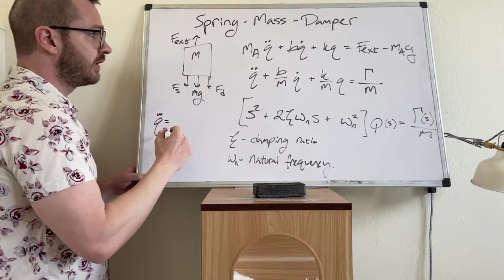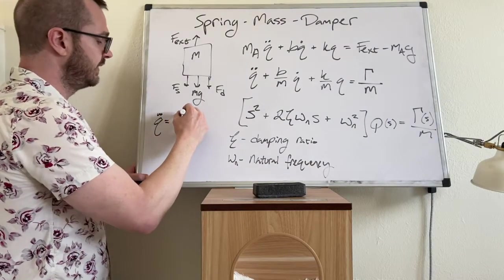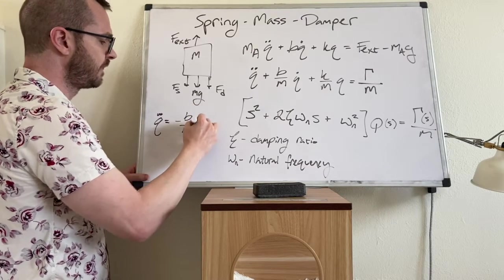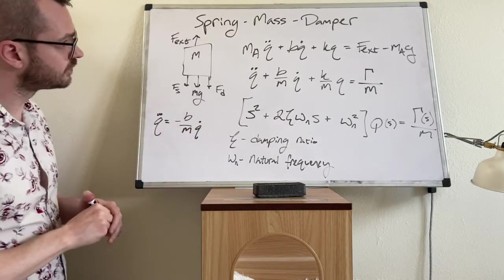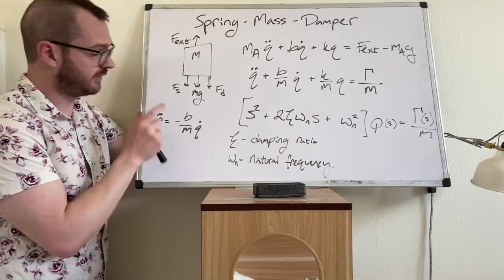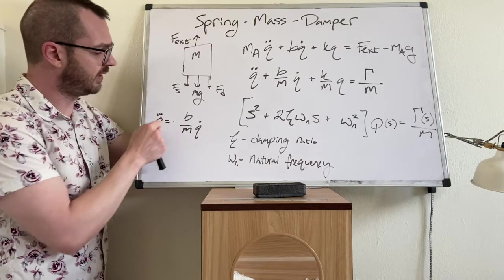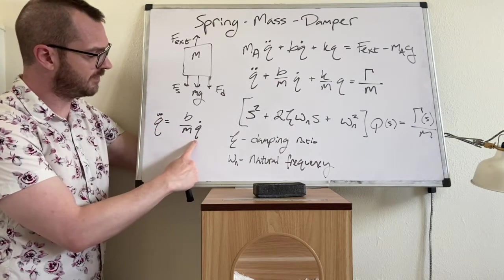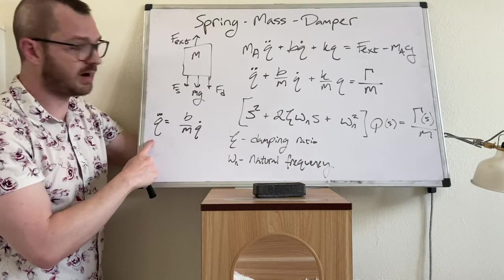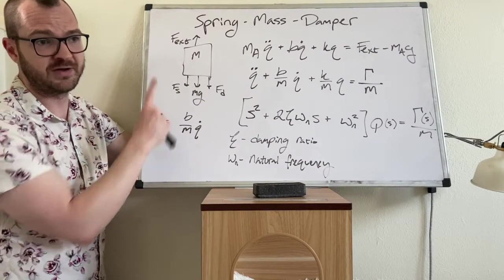If you attempt to solve for the Q double dot, and this is going to be negative B over M Q dot. If you screw this up, like this is the actual answer. If you screw this up and you make this positive, what this means is that if you have a positive Q dot, if your block is currently going up, now you end up with a positive Q double dot, which means it is accelerating up.